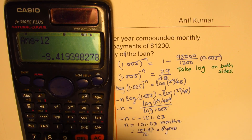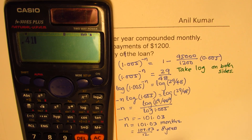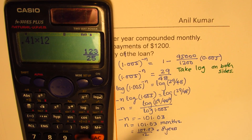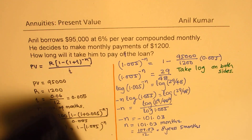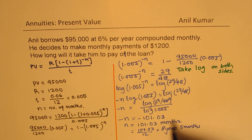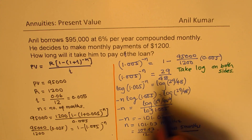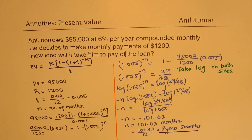And 0.41 times 12 gives us approximately 5 months — since there are 12 months in one year. So that becomes our answer: it takes 8 years and 5 months to pay off the whole loan. I hope this calculation is very clear.